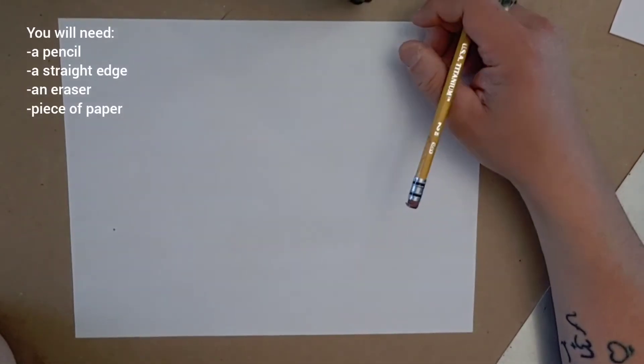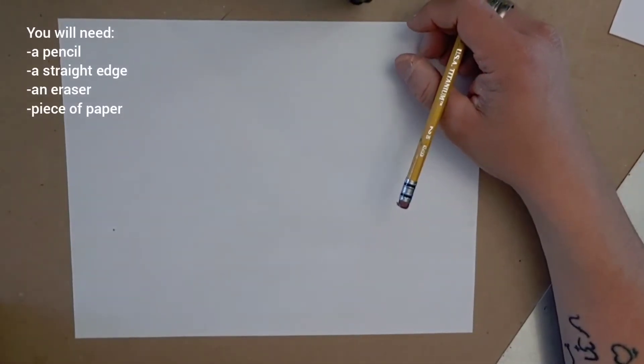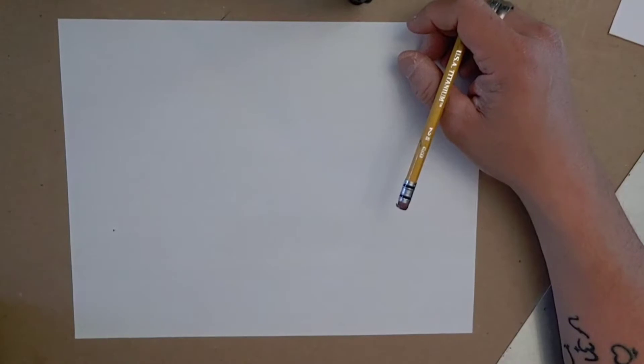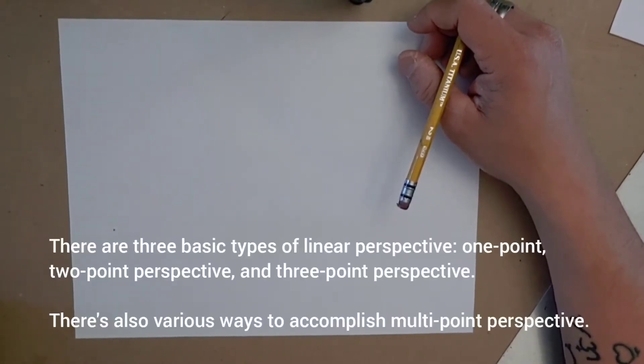All right, this next video tutorial has to do with the introduction to perspective. This one is going to be concerned with one-point perspective. There are different forms of linear perspective: one-point perspective, two-point perspective, and three-point perspective.